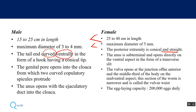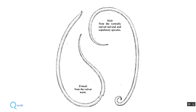The female is oviparous with an egg-laying capacity of 20,000 eggs daily. The vulva opens at the junction of the anterior and middle third of the body, and this section is very narrow — known as the vulva waist. In the diagram you can see the male and female worms: the posterior end of the male worm is curved with spicules, and the vulva waist is the narrow portion visible on the female.